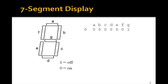So to make a one, what would you turn on? Yeah, B and C. So we turn on B and C with zero, so that makes a one.